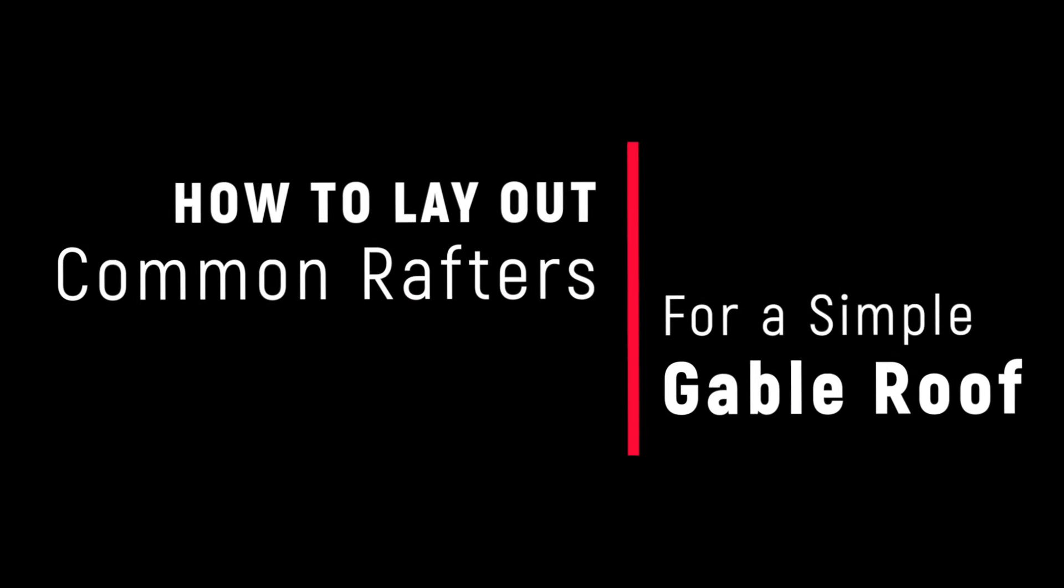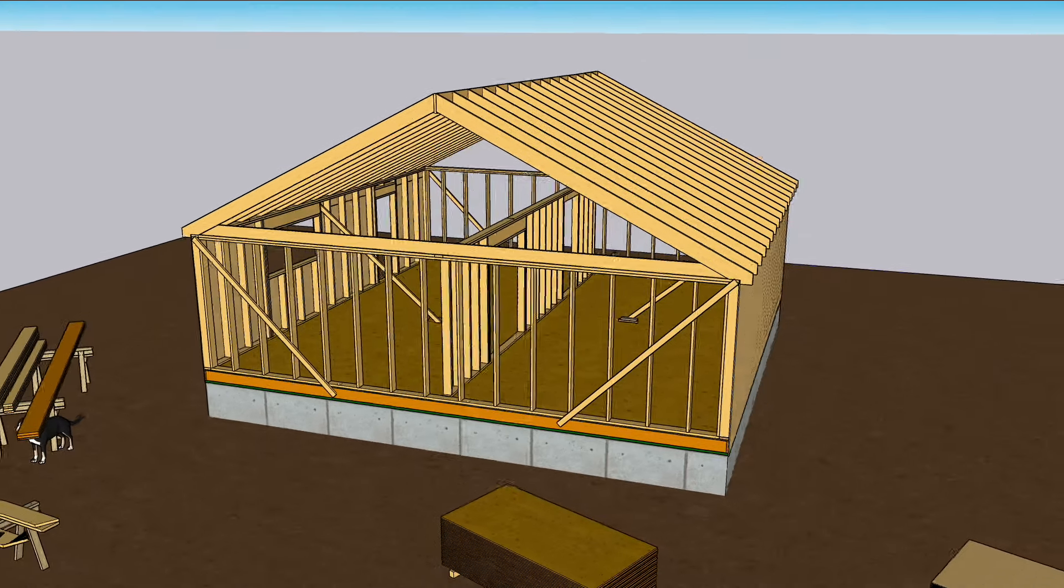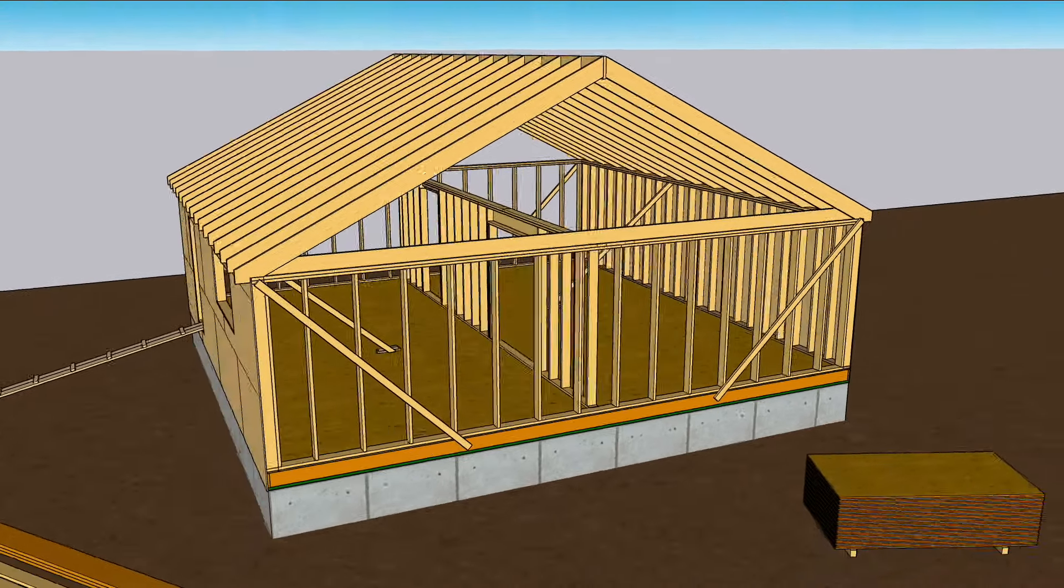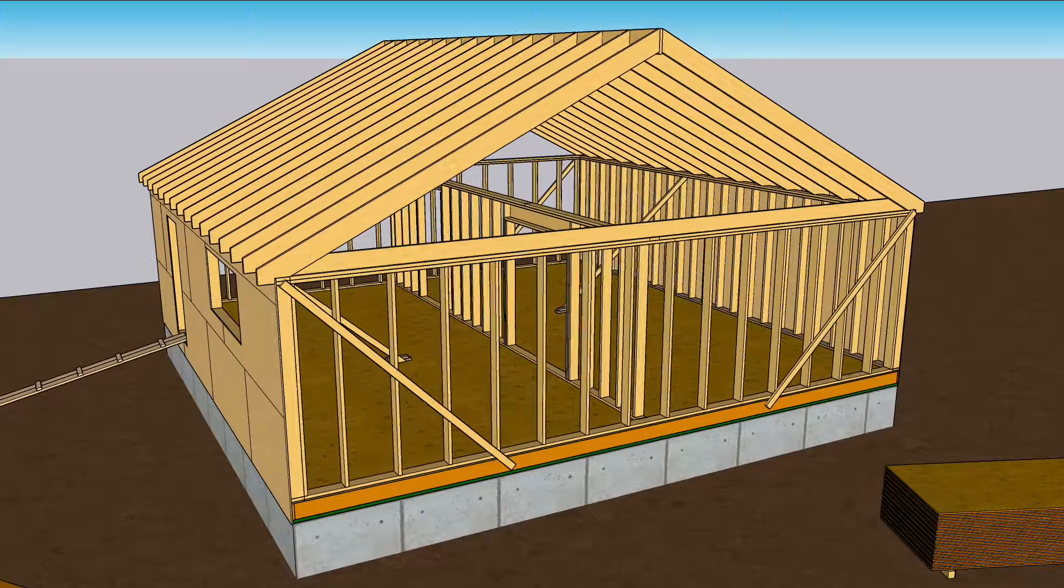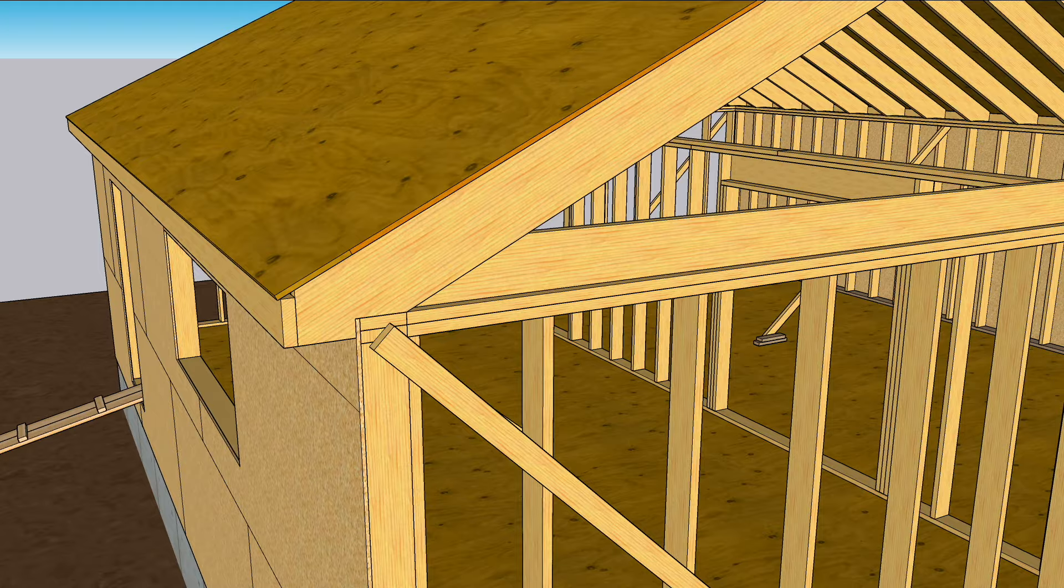A gable roof is almost the simplest roof you can frame, aside from a shed roof, which is basically half a gable roof. The frame is a series of identical rafters spaced equally for the length of the house, held together with sheathing.